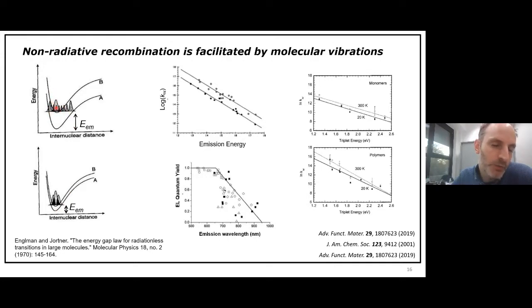is because tunneling, if you see non-radiative recombination as tunneling from the excited state to a higher vibrational energy of the ground state, this tunneling is proportional to the wave function overlap. And you can see that the wave function overlap or the higher vibrational states of the ground state is less when the emission energy is higher. When the emission energy is lower, you can more easily tunnel to a lower vibrational energy state of the ground state.